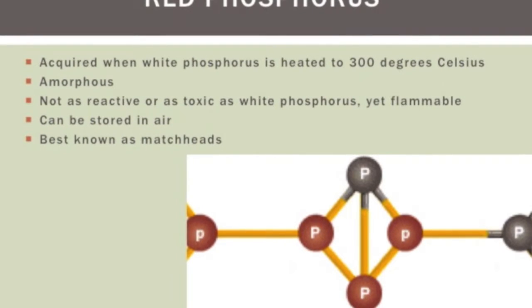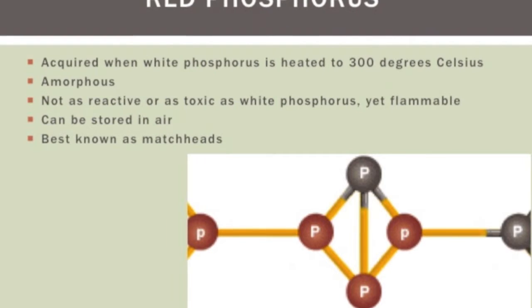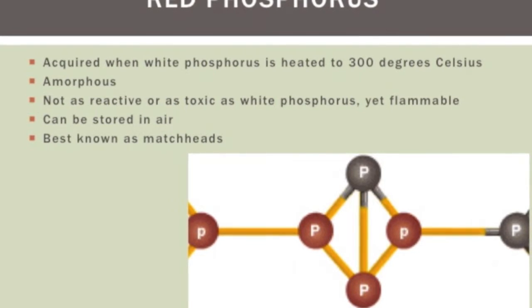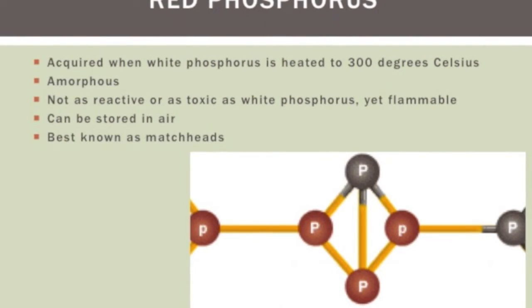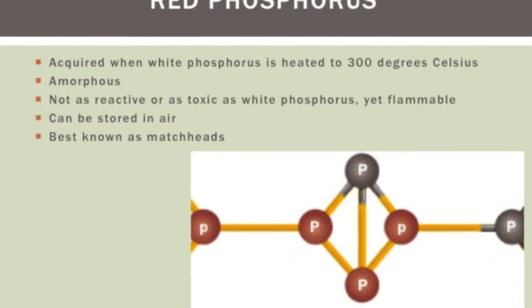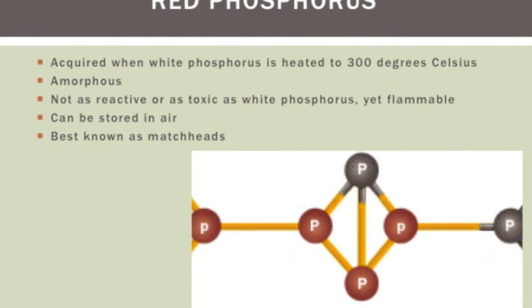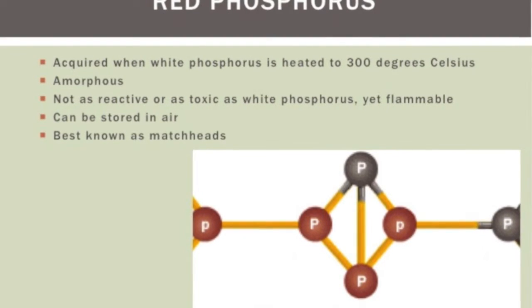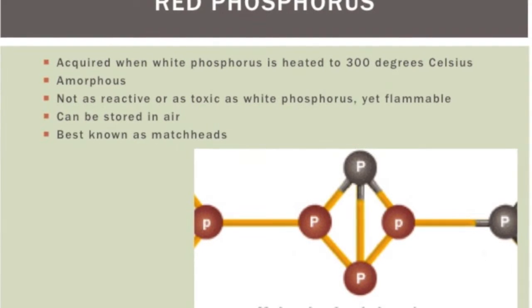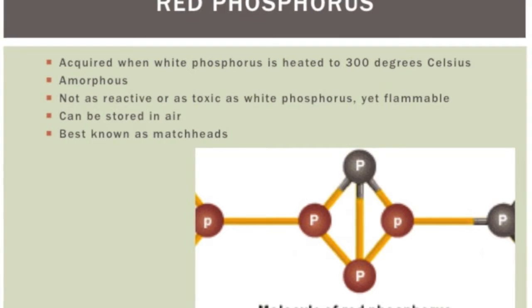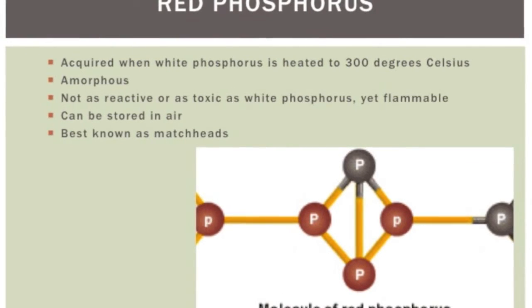Now if we heat white phosphorus to about 300 degrees Celsius, we find ourselves with our second allotrope, red phosphorus. It consists of a chain of white phosphorus molecules with its tetrahedral structure broken, causing it to be amorphous. Though not as reactive or as toxic as white phosphorus, it is still flammable. It can be stored in the air and its most common usage today is in match heads.